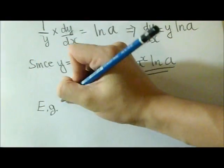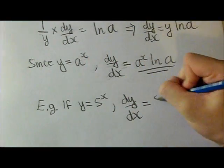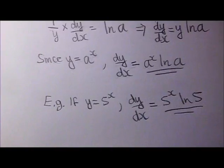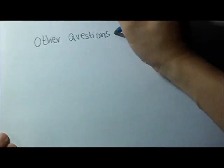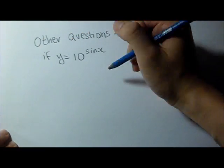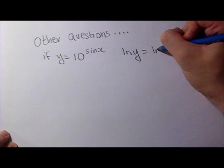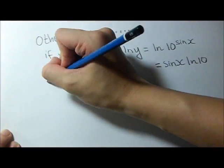And if for example, y equals 5 to the x, dy/dx equals 5 to the x ln 5. And for another question, where y equals 10 to the power sine x, we do the same thing, apply the same principles. So ln y equals ln 10 sine x. So sine x ln 10, it's equivalent.